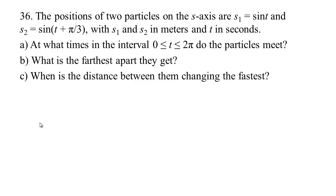In this problem, we have two particles on the s-axis and they're both moving back and forth because they're both some kind of sine function. This one has a little phase shift that's got it behind a little bit. So we've got our s-axis: here's zero, here's negative one, and here's one. With time, the particles are moving back and forth. We want to know: when do they meet?